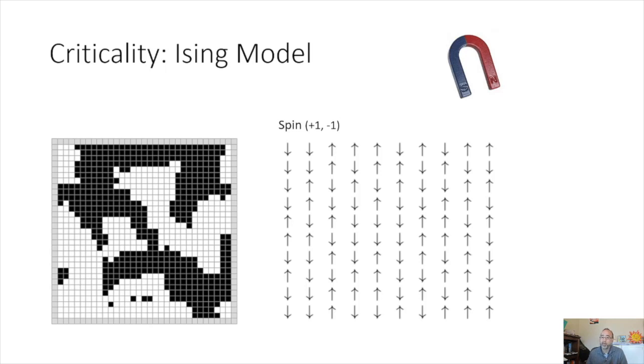Now, the Ising model is a representative model of ferromagnetic magnetization. Each grid here represents an atom which could be aligned in one of two conformations, either black or white, or in this case, up or down, plus one or minus one. The total magnetization of the system is essentially the average of all the spins. And it's the dynamics of the interactions between the atoms that makes this model interesting.